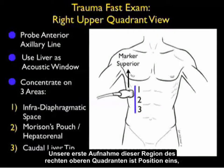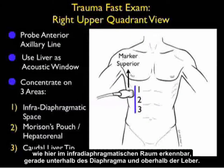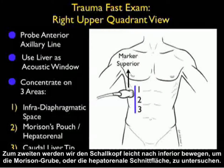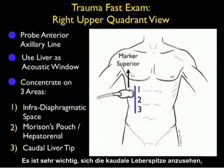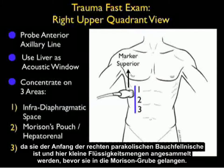Our first view from this right upper quadrant area will be position one, in the infradiaphragmatic space, just below the diaphragm and above the liver. Second, we'll move the probe slightly inferiorly to look into the traditional Morrison's pouch, or hepatorenal interface. The last view is the caudal tip of the liver, shown here in position three. It's very important to look at the caudal tip of the liver, as this represents the beginning of the right pericolic gutter, and small amounts of fluid will pool here before moving into Morrison's pouch.